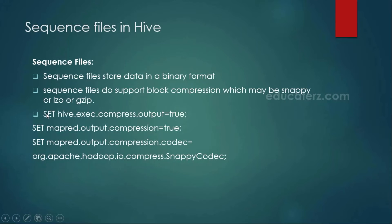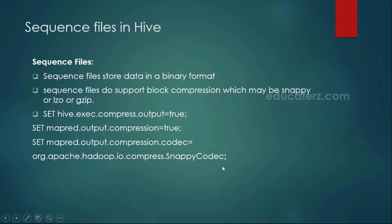How you set up these compression techniques is by opening your Hive shell or setting properties. You can enable these by setting properties like set hive.exec.compress.output to true, similarly mapreduce.output.fileoutputformat.compress to true. And here you also have to specify the codec — whether it is Snappy, LZO, or GZip — whichever compression technique you want to use, you specify as part of the compression codec.